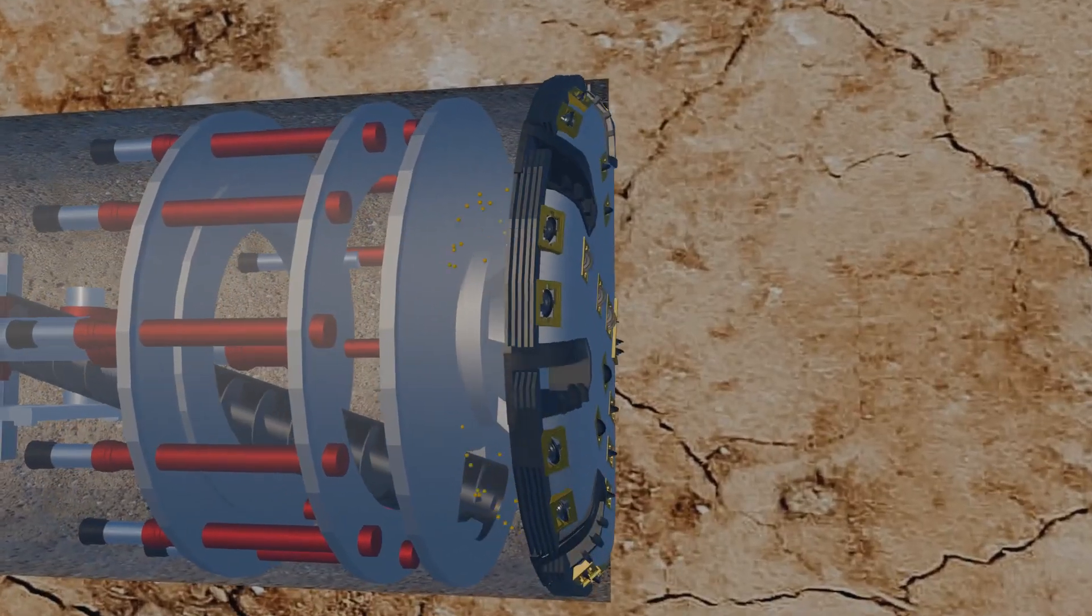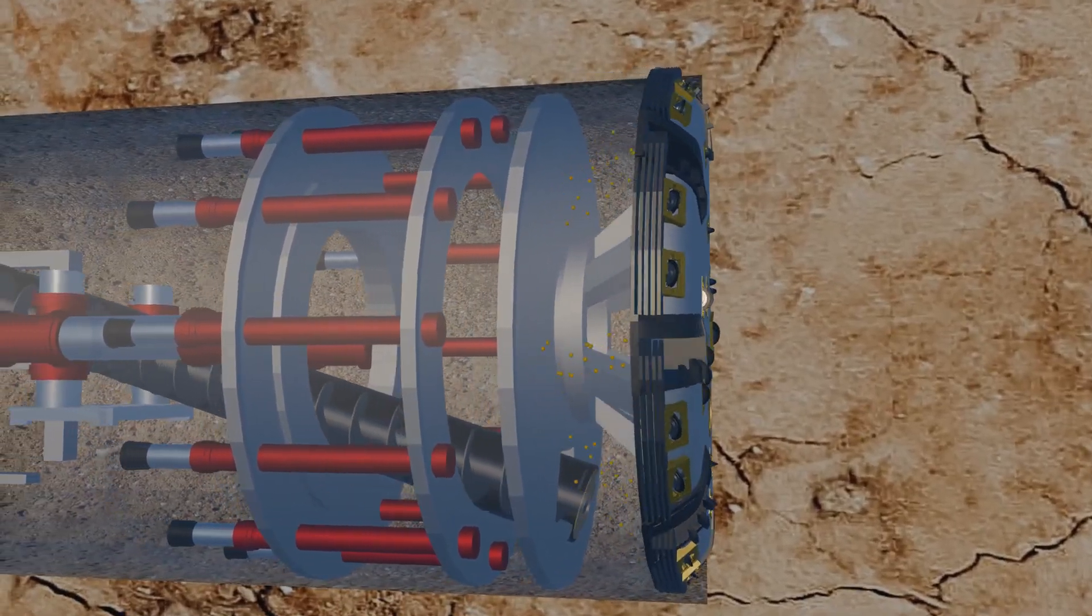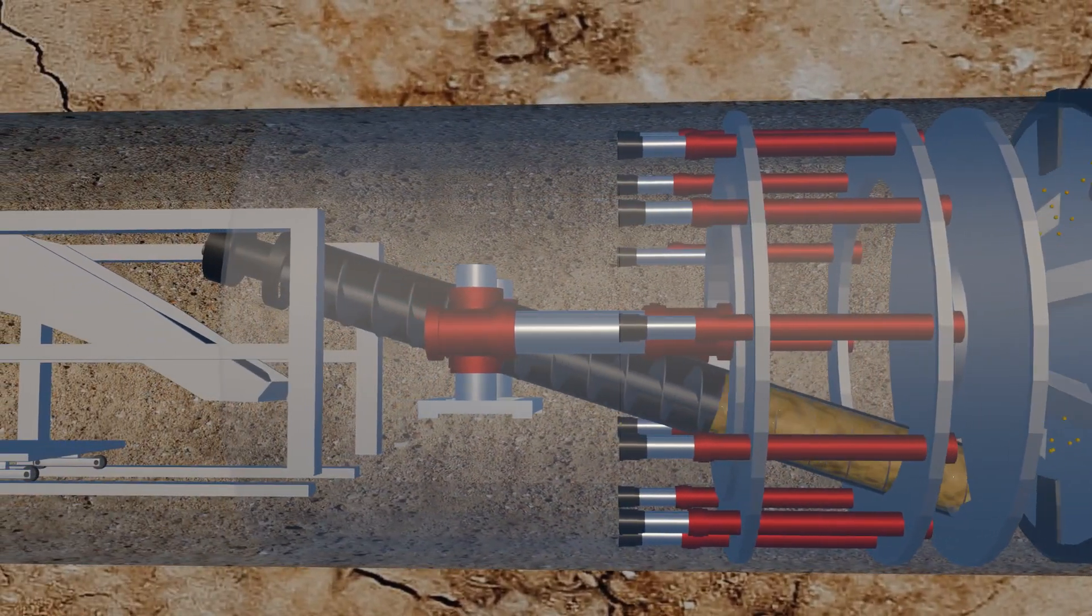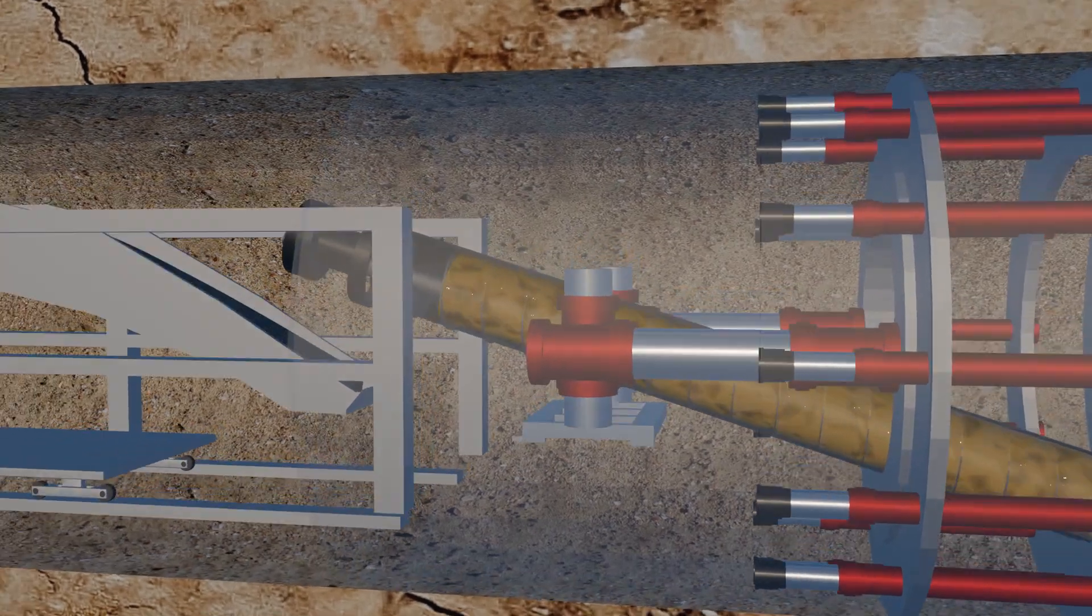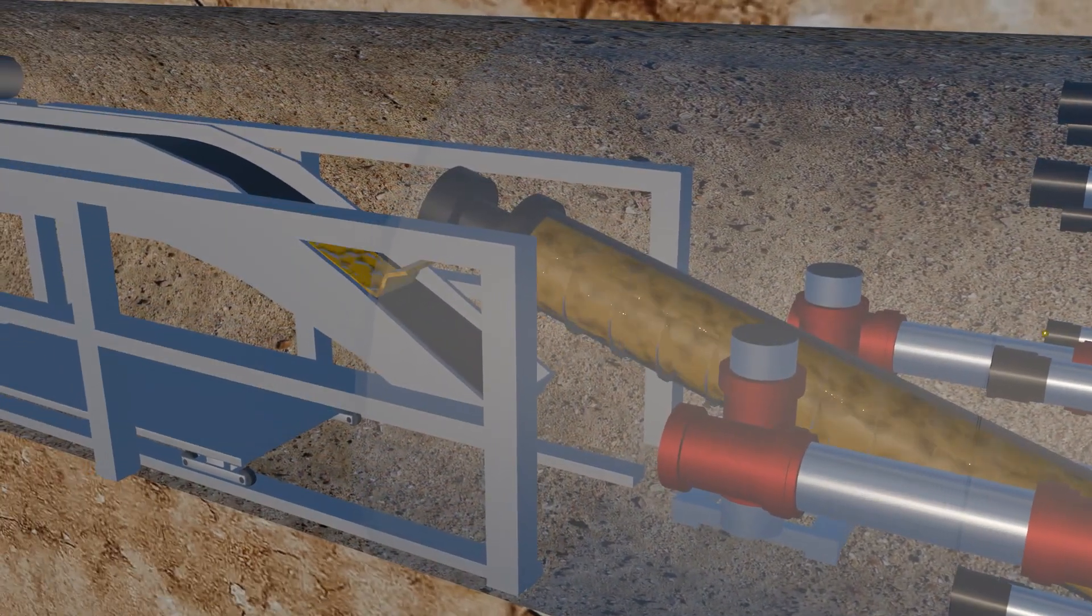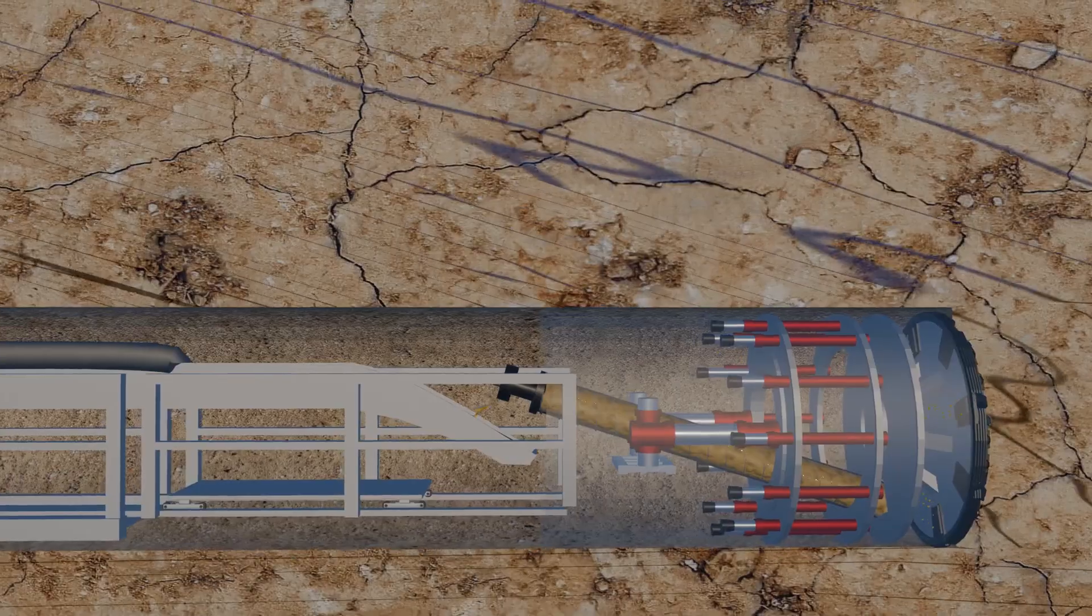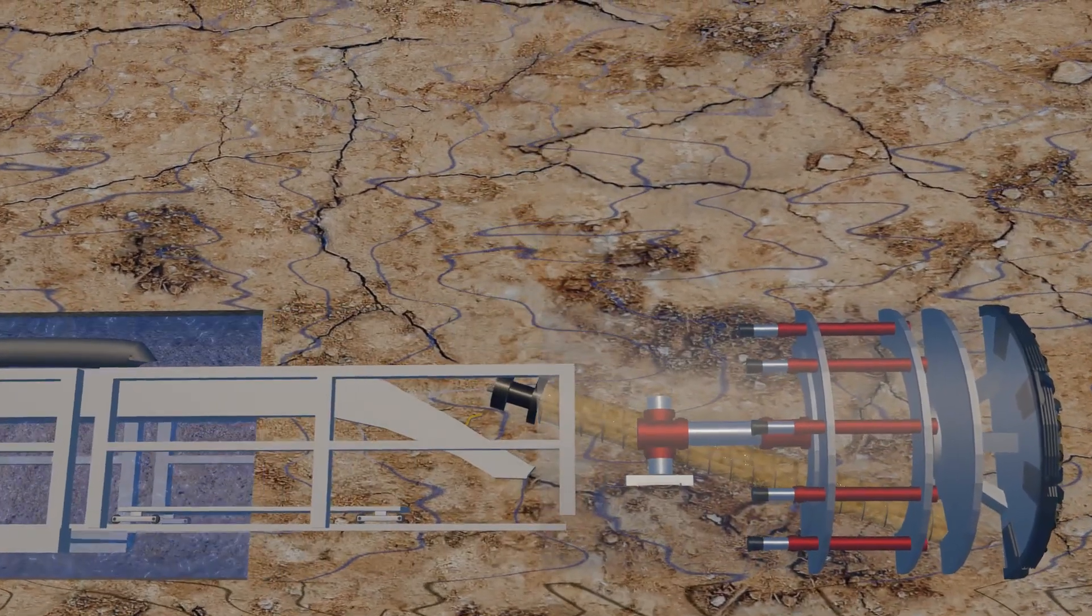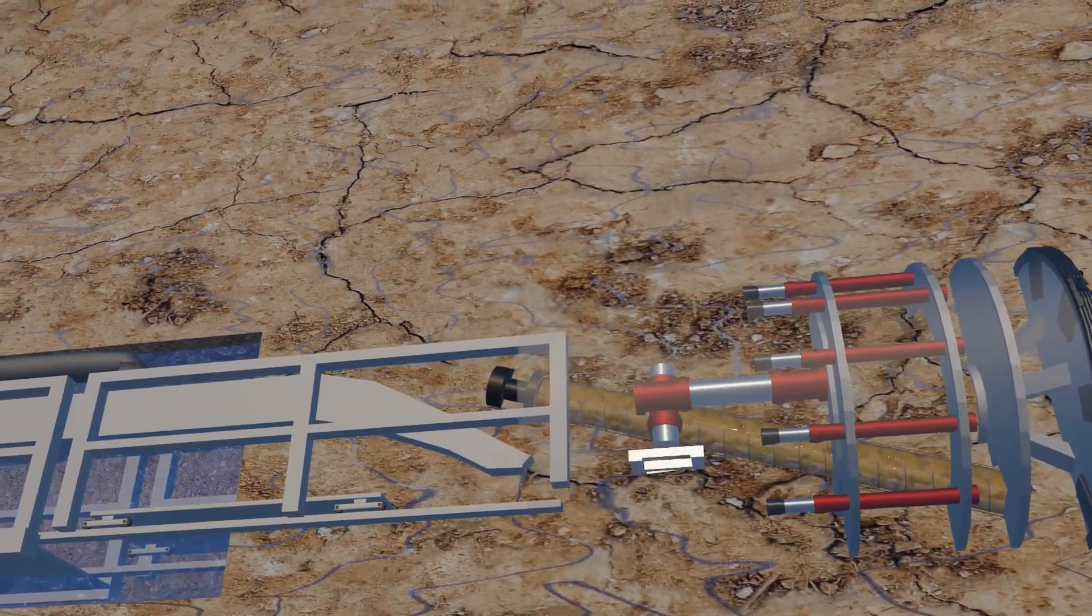The cutter head of the TBM excavates the chalk marl, and with the help of a screw conveyor, the waste material is transported to a conveyor belt, which then carries it out of the tunnel. Despite the machine operating smoothly, the tunnel unexpectedly collapsed.